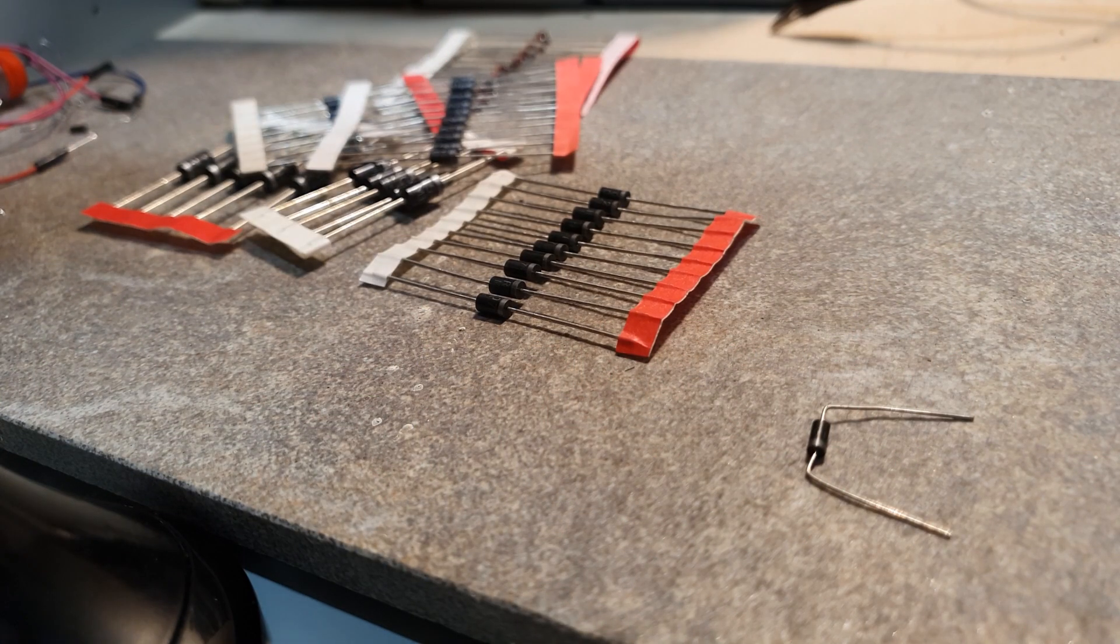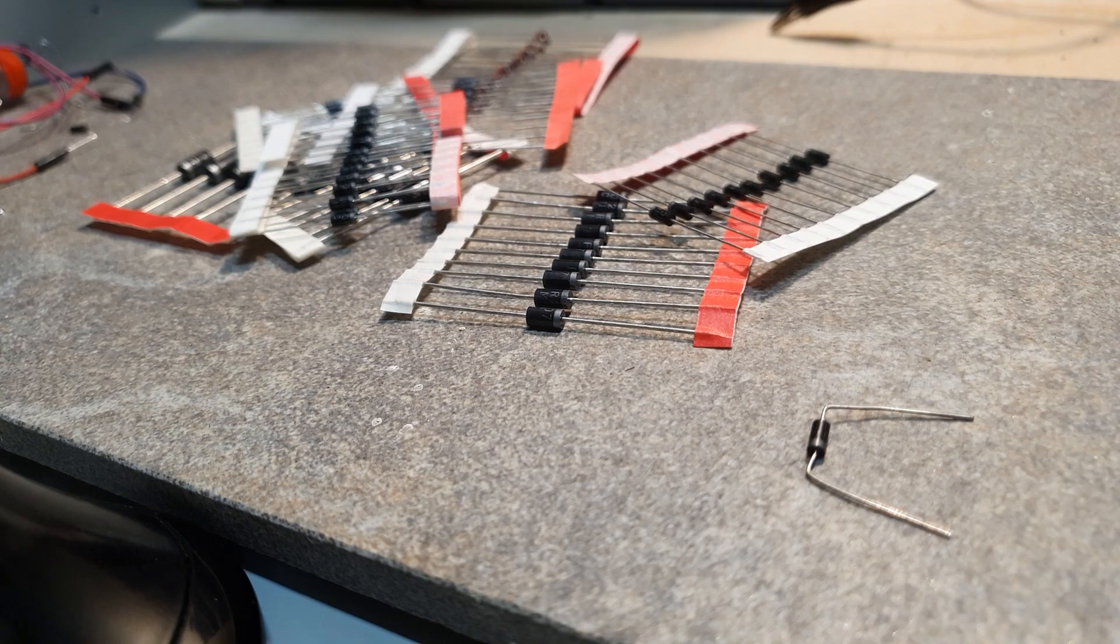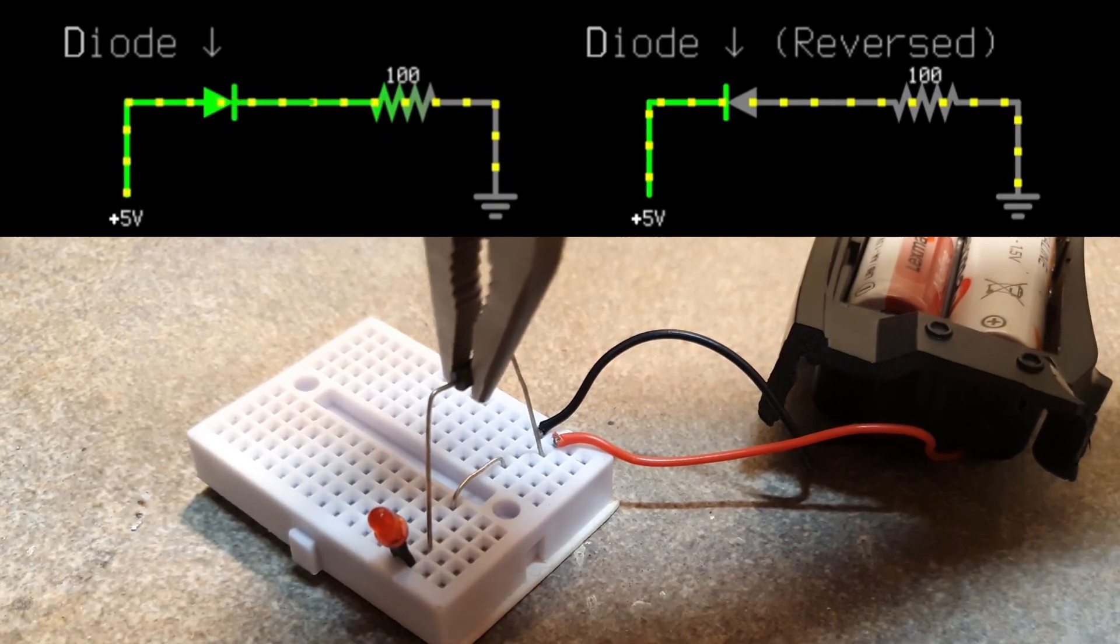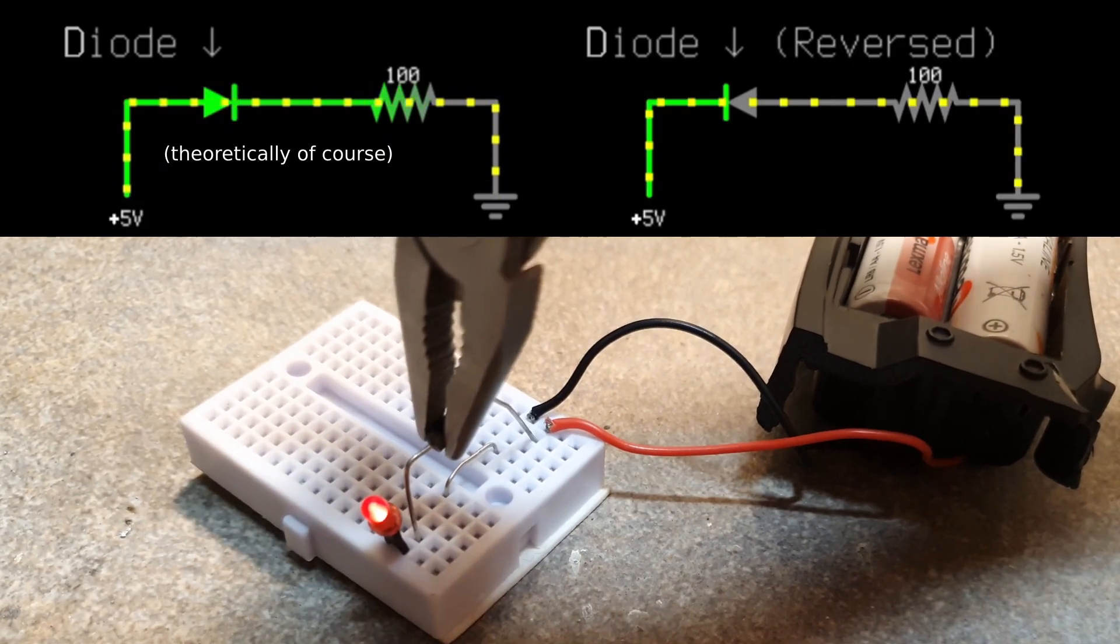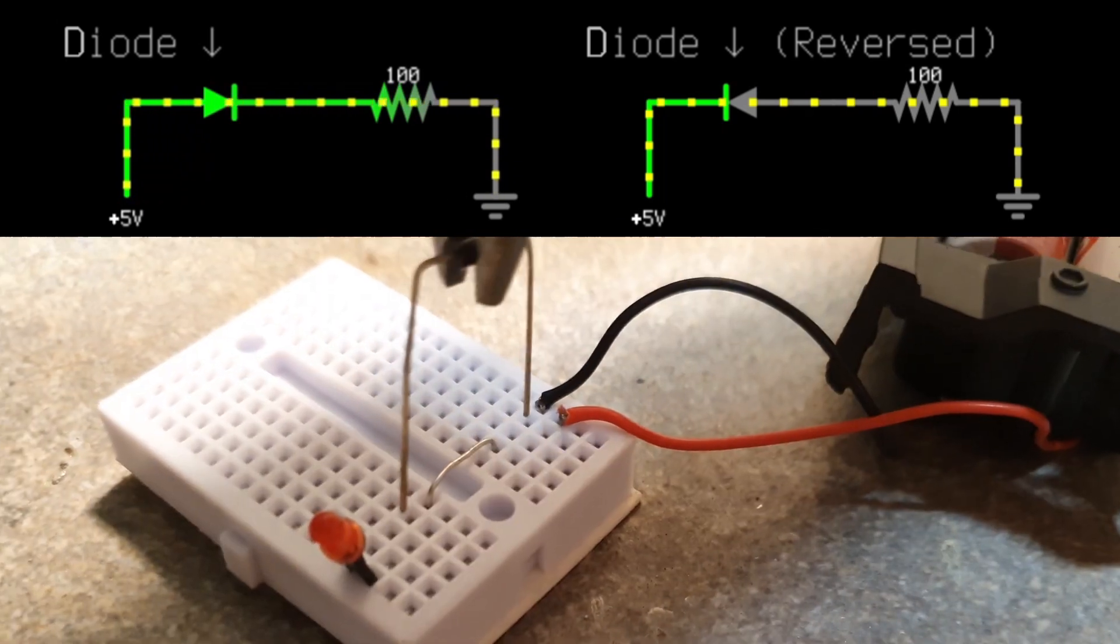Diodes. Common and useful electronic components that allow current to flow in only one direction. In other words, they have zero resistance in one way and infinite resistance in the other way.